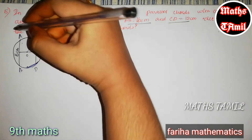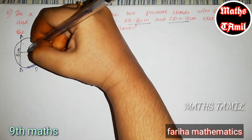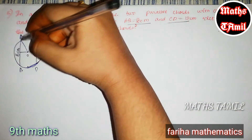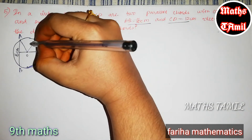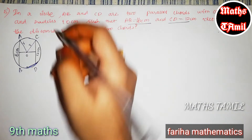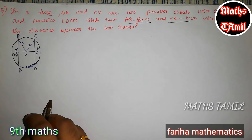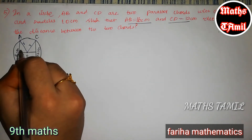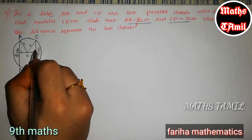This portion is the radius. So this is the radius, and this is also the radius. Now we will find the right angle form — a perpendicular from the center to the chord forms a right angle.